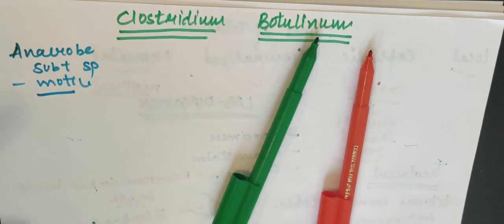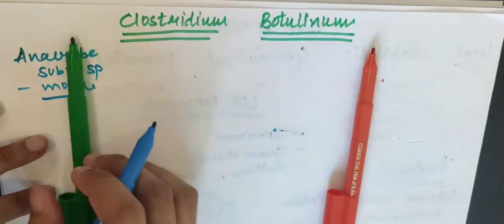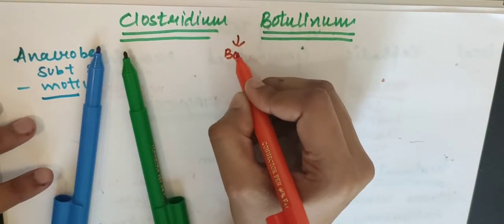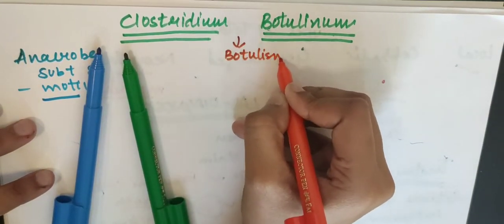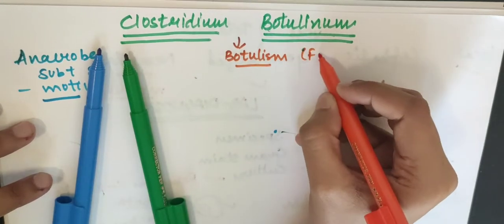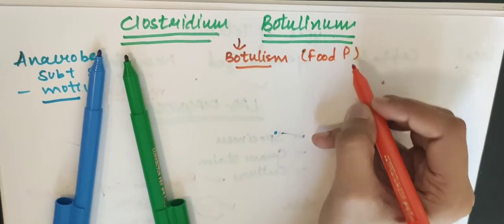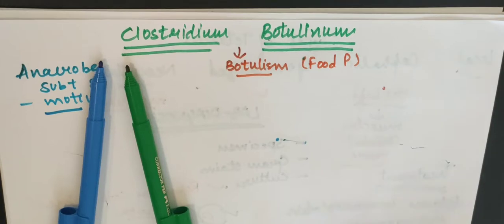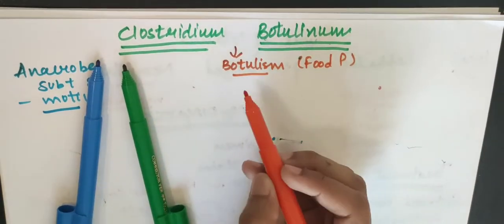And you will study botulinum. How much Clostridium botulinum will be studied in this chapter. What is botulism basically? Food poisoning - it causes food poisoning. Basically we get it from food.